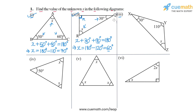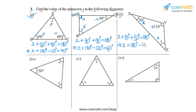In part 3, the three interior angles of the triangle are x, 30 degrees, and 110 degrees. The sum of these three angles will be 180 degrees. So we can write x plus 30 degrees plus 110 degrees is equal to 180 degrees. 30 degrees plus 110 degrees is 140 degrees, so x is equal to 180 degrees minus 140 degrees, which comes out to be 40 degrees. So the answer for part 3 is 40 degrees.